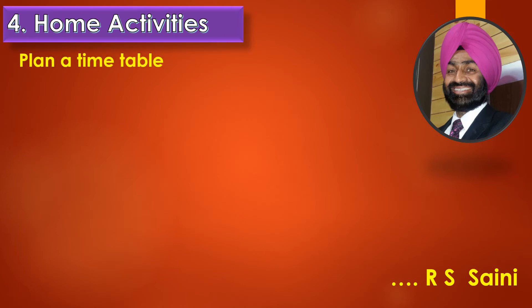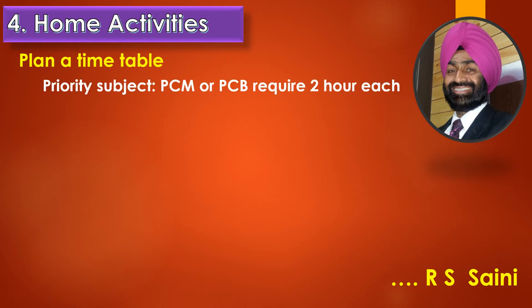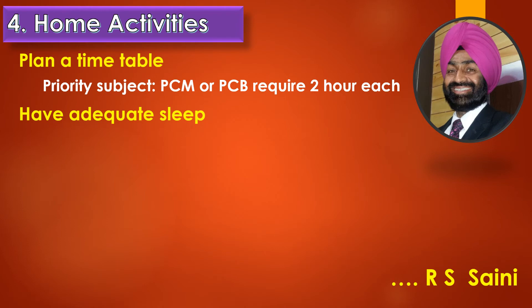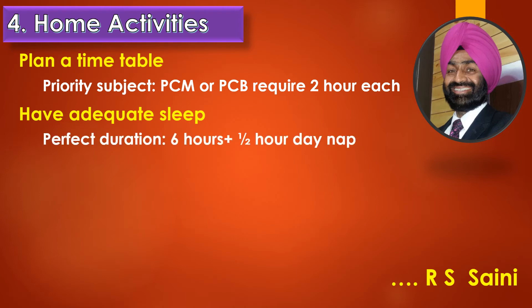At home, first of all you must have a planned timetable — it must be stuck to your study table wall and you must strictly follow it. Priority subjects: if you are a medical student, then physics, chemistry, and biology; if non-medical, then physics, chemistry, and math. Each subject requires a minimum of two hours daily at home for practice. Also have adequate sleep — if you keep awake for long hours at night, your performance will come down. Have five to six hours of sleep at night and a half-hour nap during the daytime before starting your next study session.